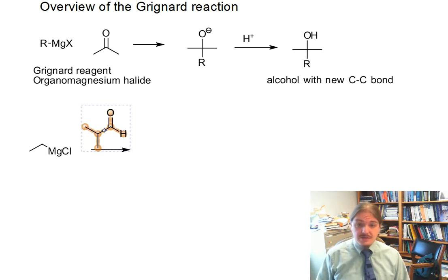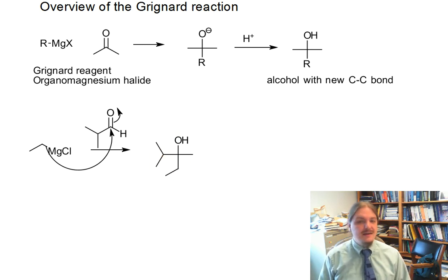The Grignard reagent is a nucleophile, and it's nucleophilic at carbon. The carbon-magnesium bond is polar, but magnesium is less electronegative than carbon. So you get nucleophilic attack from the carbon. I like to draw these alkoxide intermediates in this plus shape.